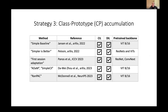The third way pre-trained models have been used is what I call class prototype, or CP, accumulation. Starting at the bottom, our own paper, just accepted to NeurIPS 2023, is a method we call RANDFACK — strongly influenced by first session adaptation from Panos et al. and the ADAM and Simple SEAL methods from Jowhar et al. The earlier papers in that list are kind of precursors to those works.